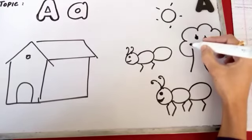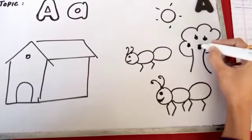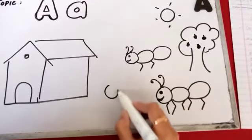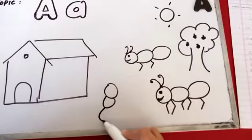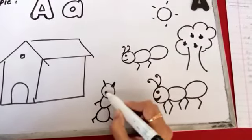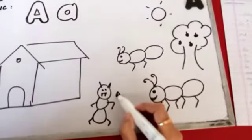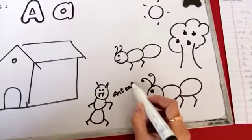And when she headed toward the apple tree, suddenly an anteater came up. Anteater came up. This is an anteater. He came up.